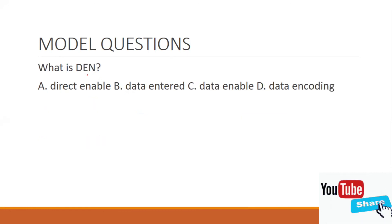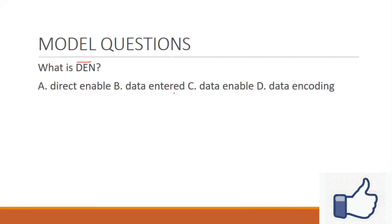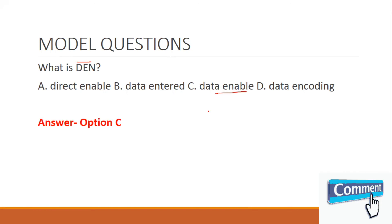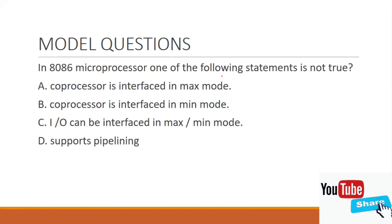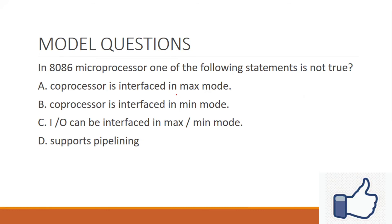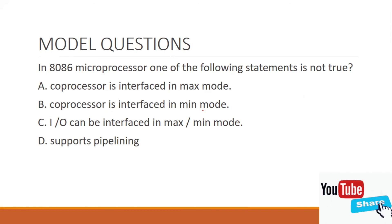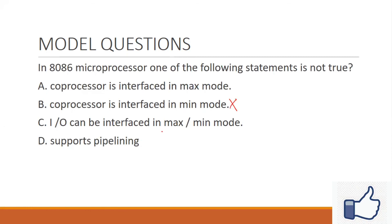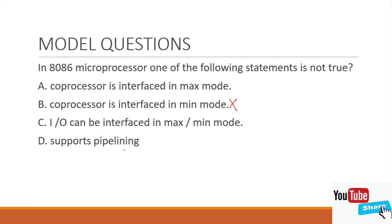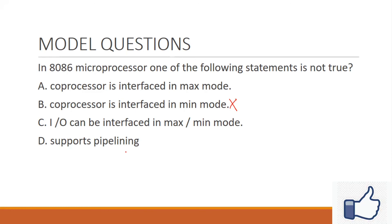Next: what is DEN? DEN bar means Data Enable — option C is the correct answer. The last question: in the 8086 microprocessor, which statement is not true? Co-processors are interfaced in max mode. Minimum mode is not for co-processors — it is a single processor. The 8086 supports pipelining through its Bus Interface Unit and Execution Unit.